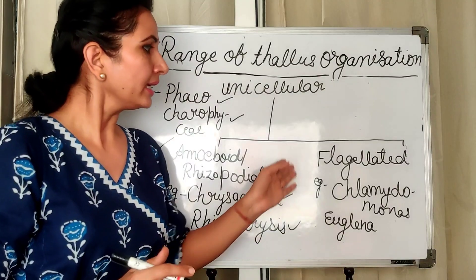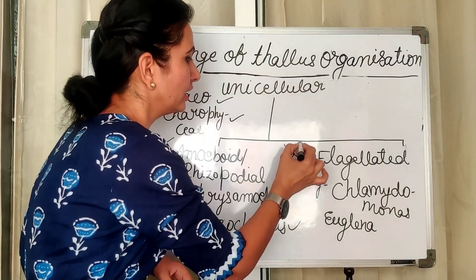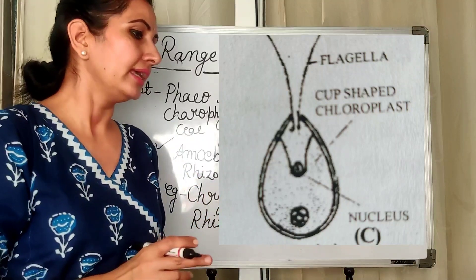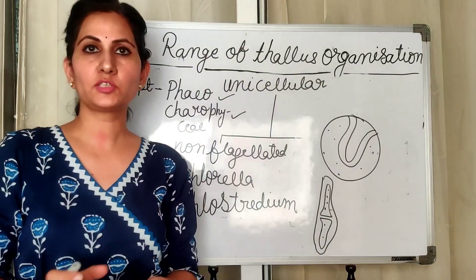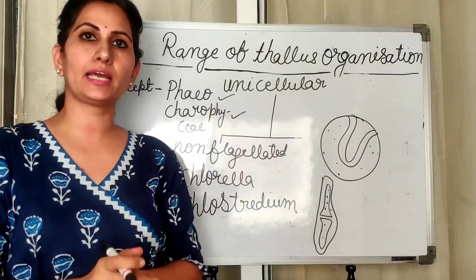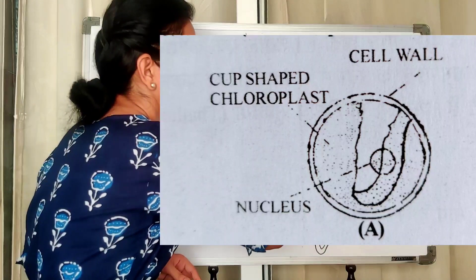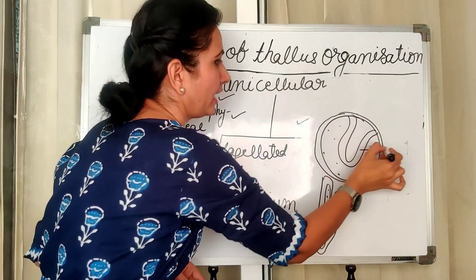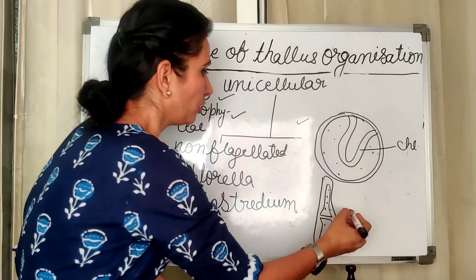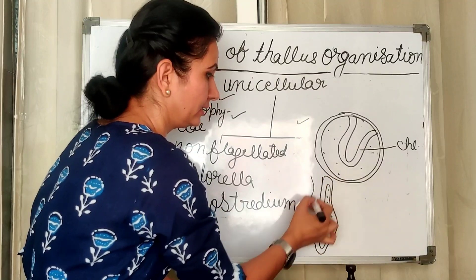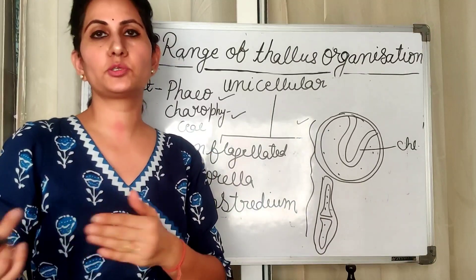The next unicellular form is the flagellated type. In Chlamydomonas, two flagella are present on the anterior side; in Euglena, flagella are also present, making these algae motile. The last unicellular type is the non-flagellated type. Chlorella is an example — it has a coccoid or rounded structure with a cup-shaped chloroplast. Closterium is cylindrical in shape. Both lack flagella and are therefore non-motile.